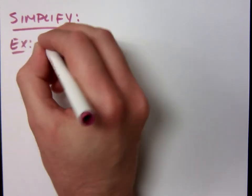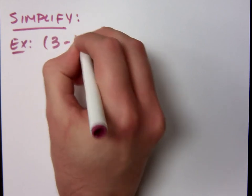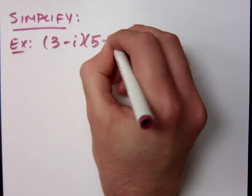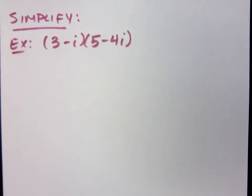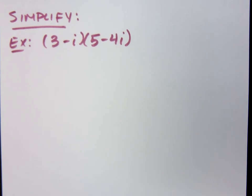Let's keep multiplying. 3 minus i times 5 minus 4i. What am I going to do here? Let's FOIL.